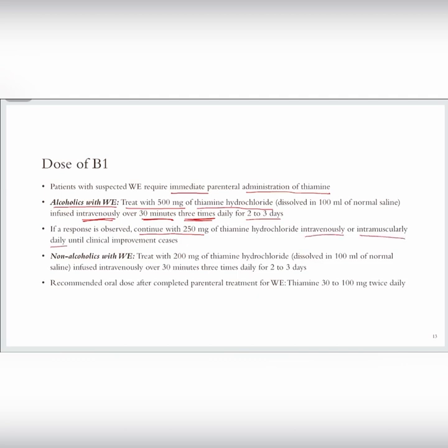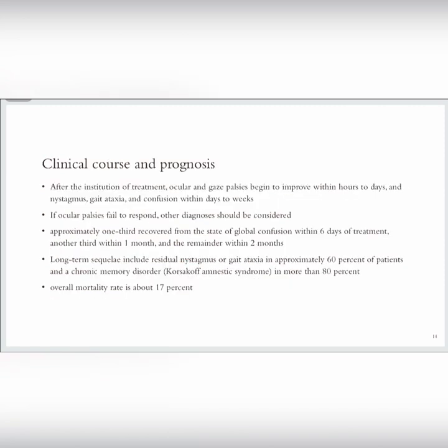In non-alcoholics with Wernicke encephalopathy, treat with 200 mg of thiamine dissolved in 100 ml of normal saline, infused intravenously over 30 minutes, three times daily for two to three days. If there is clinical improvement, we will switch to oral administration. Recommended oral dose after completed parenteral treatment for Wernicke encephalopathy is thiamine 30 to 100 mg twice daily.